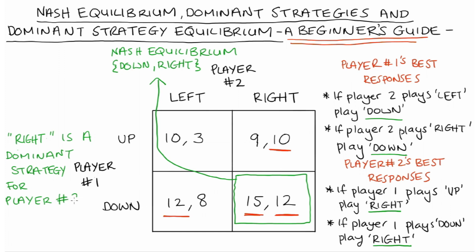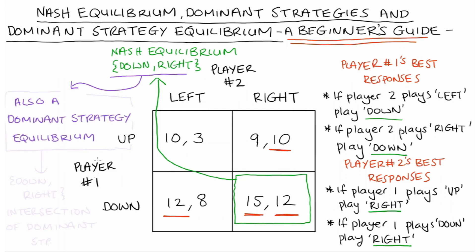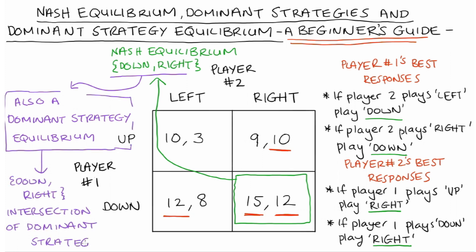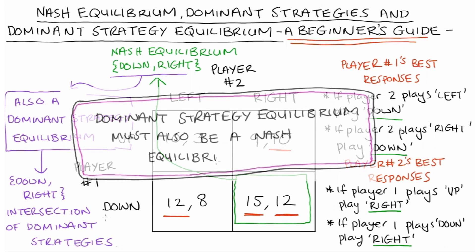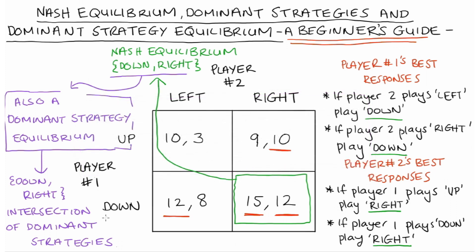So if player one plays down and player two plays right, not only is this a Nash equilibrium, but it's also an outcome where both players are playing their dominant strategies — so it's what we call a dominant strategy equilibrium as well. No one benefits from unilateral deviation, it's still a Nash equilibrium, but because it's an intersection of dominant strategies, everyone is doing the best they can regardless of what the other players are doing. Any equilibrium in dominant strategies will also necessarily be a Nash equilibrium, because an intersection of dominant strategies must also be an intersection of best responses.